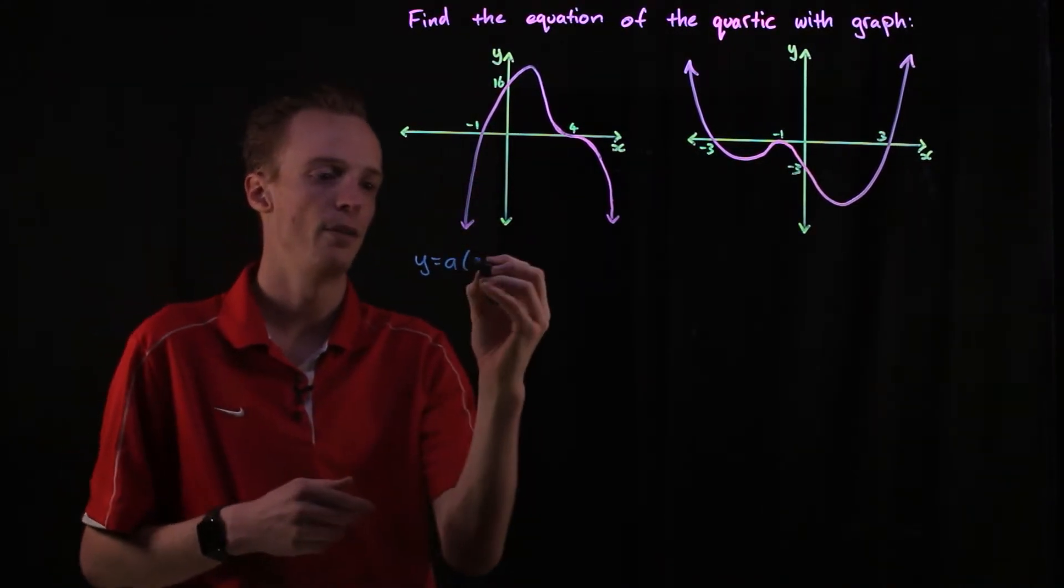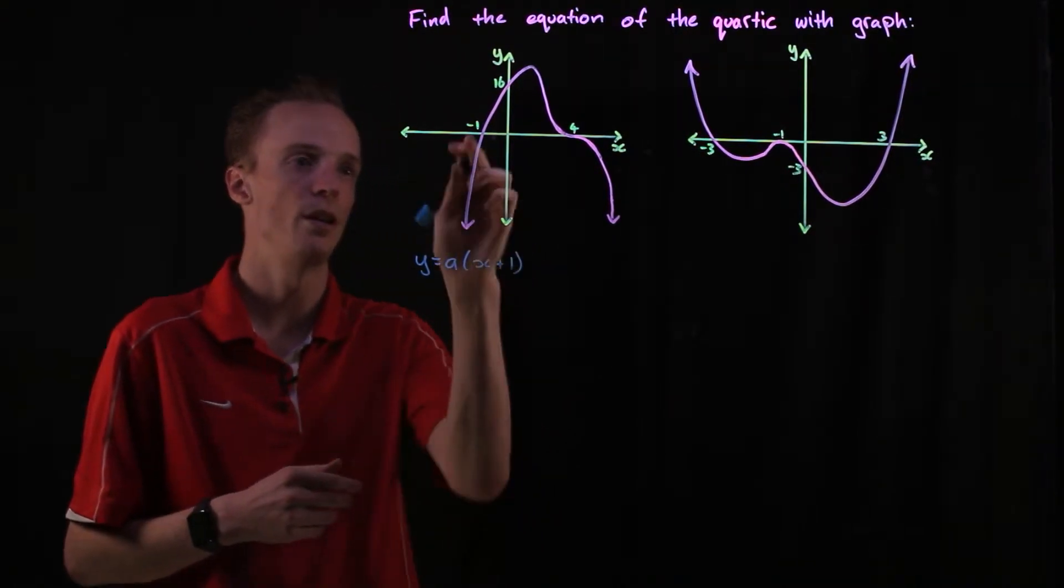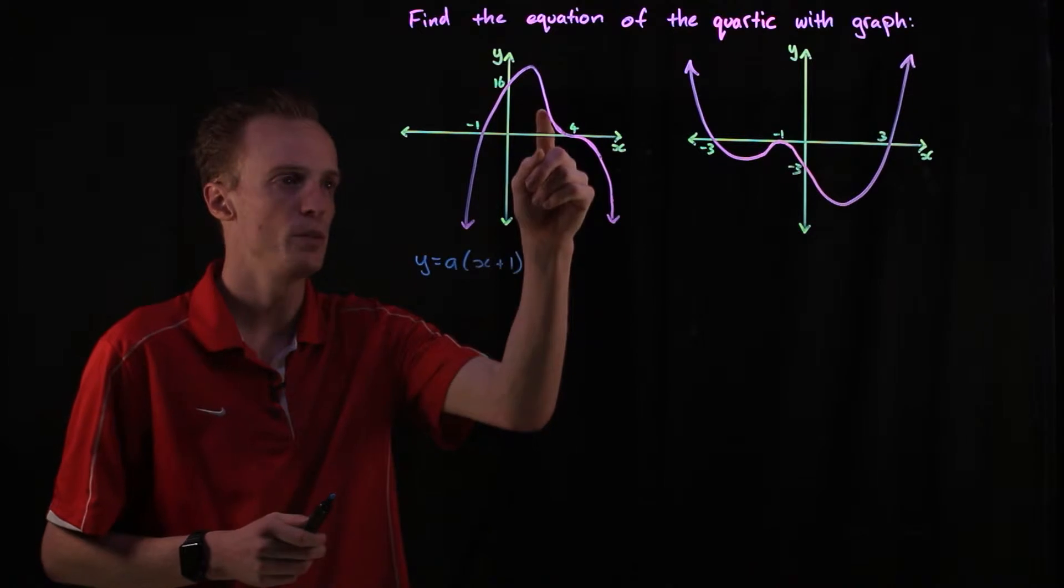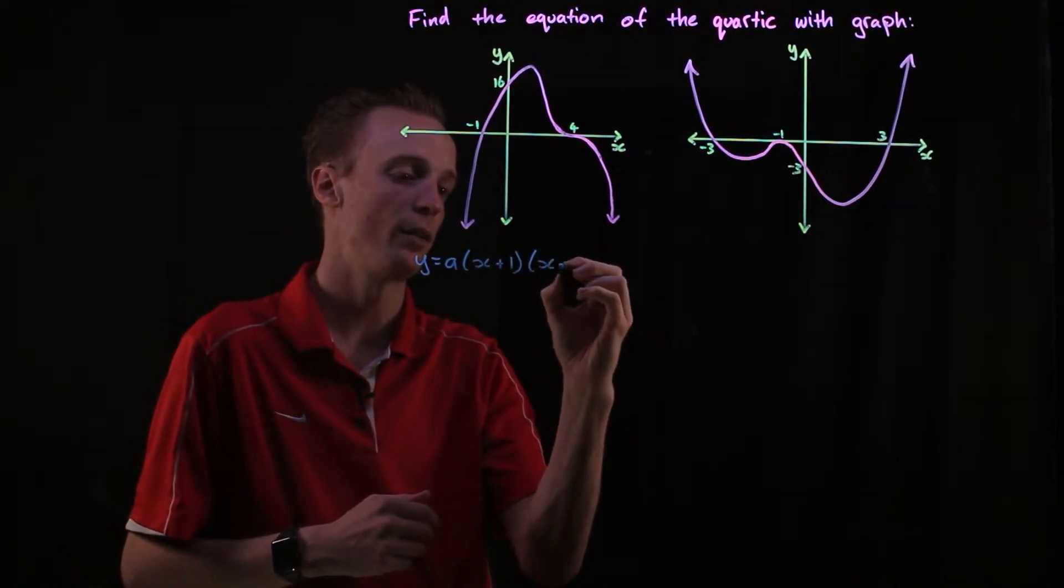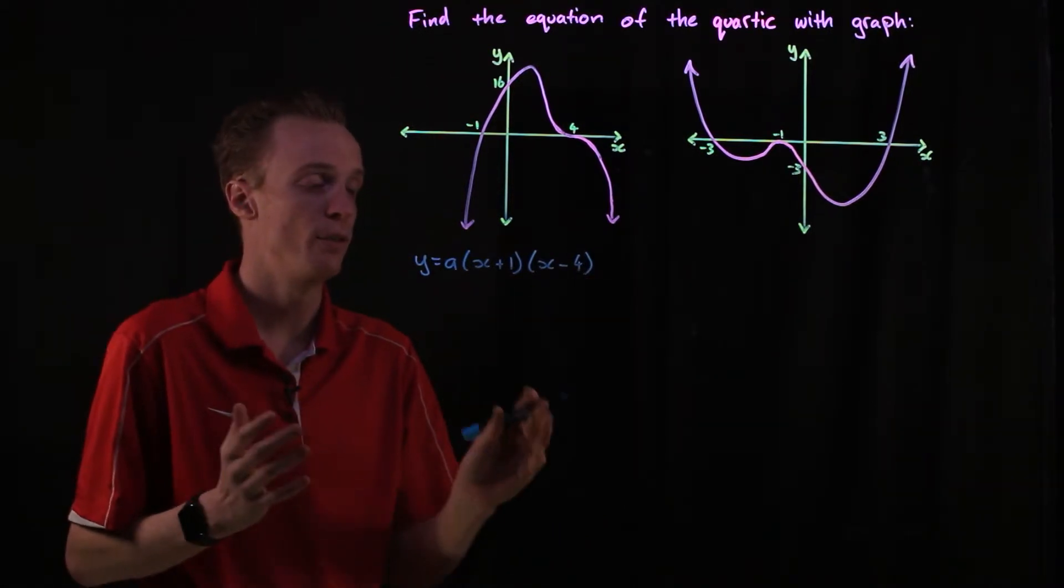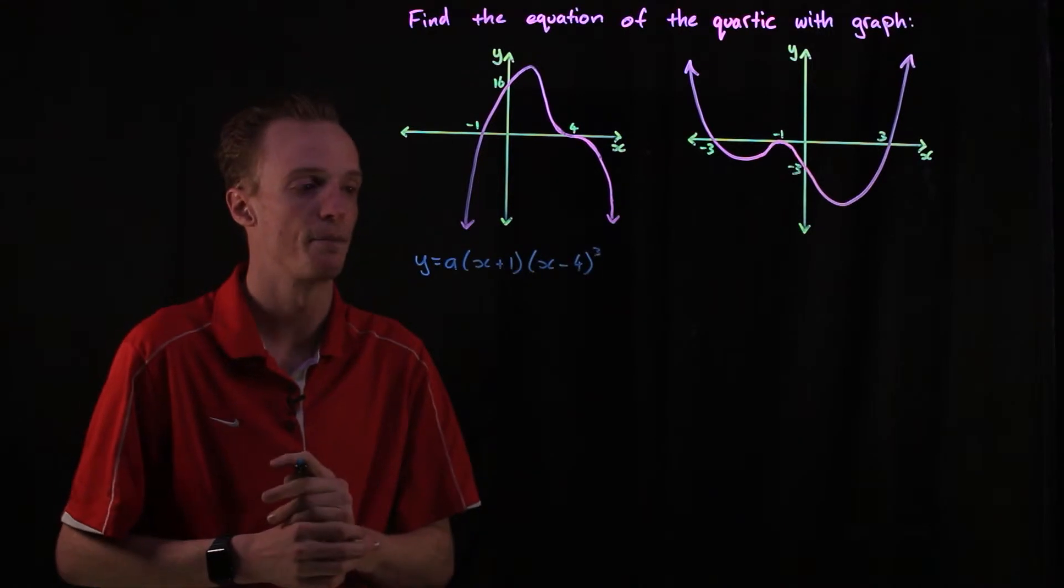Because this is cutting at negative one, the first factor that we've got is going to be x plus one, just the opposite sign of what we had here. Because we've got this stationary point of inflection at this other point, x minus four here, that stationary point of inflection indicates this is going to be a cubed linear factor.